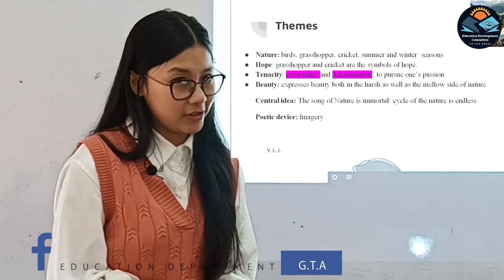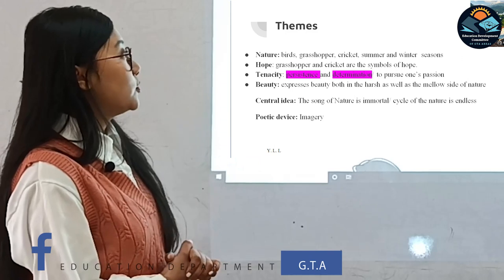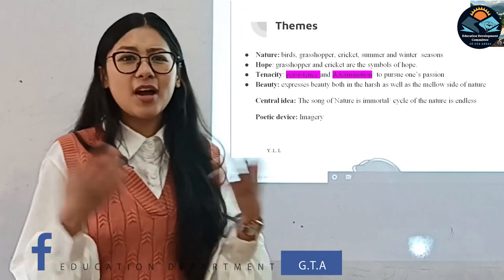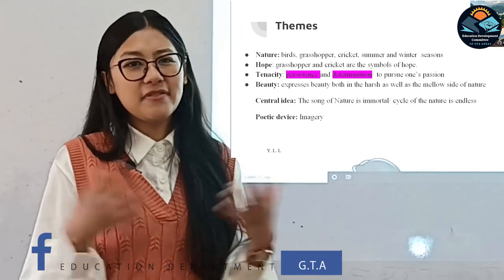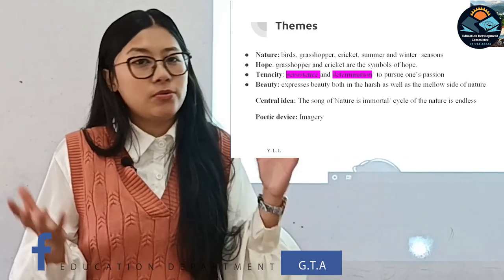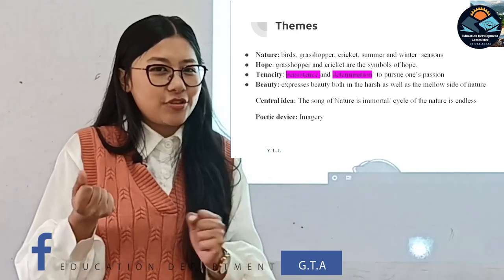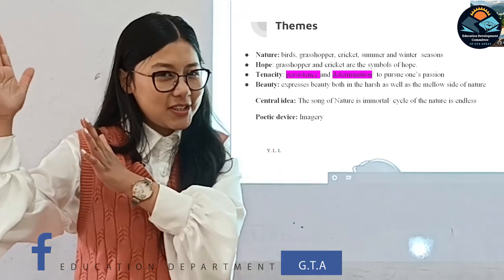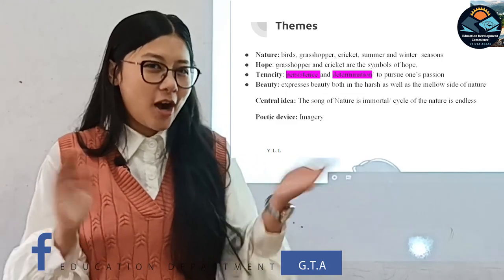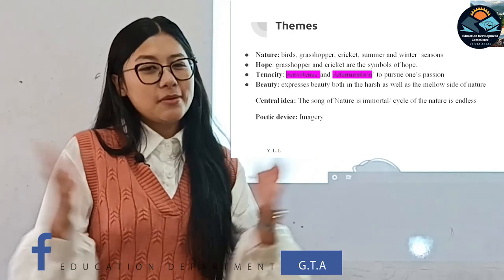Another theme is beauty — Keats expresses beauty both in the harsh and the mellow side of nature. You have to find beauty and happiness in everything. In winter you enjoy the snow, no matter how cold it is. In summer you love ice creams and cool things despite the scorching heat. Can you find beauty in both the harshness of weather? This is what John Keats is trying to present through the musical voices of the insects.